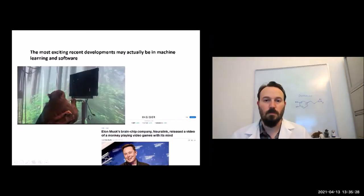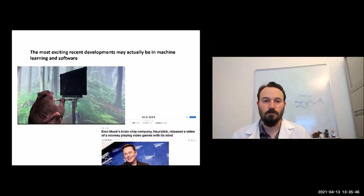One of the things the Neuralinks allow Pager to do is to play his favorite video game, Pong. To control his paddle on the right side of the screen, Pager simply thinks about moving his hand up or down. We've removed the joystick altogether. Now that he's up to speed, let's increase the difficulty and see how well Pager can play with the Neuralink.